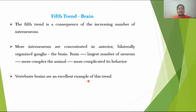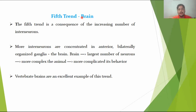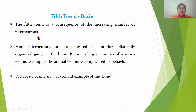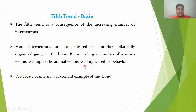The fifth and last evolutionary trend of the nervous system is the development of a highly advanced brain. In invertebrates, this is seen in highly advanced animals like the octopus and squid, which have a very sharp brain. The fifth trend is the consequence of an increasing number of interneurons. More interneurons are concentrated anteriorly in a bilaterally organized ganglion — the brain. The brain contains the largest number of neurons and produces complex, complicated behavior.